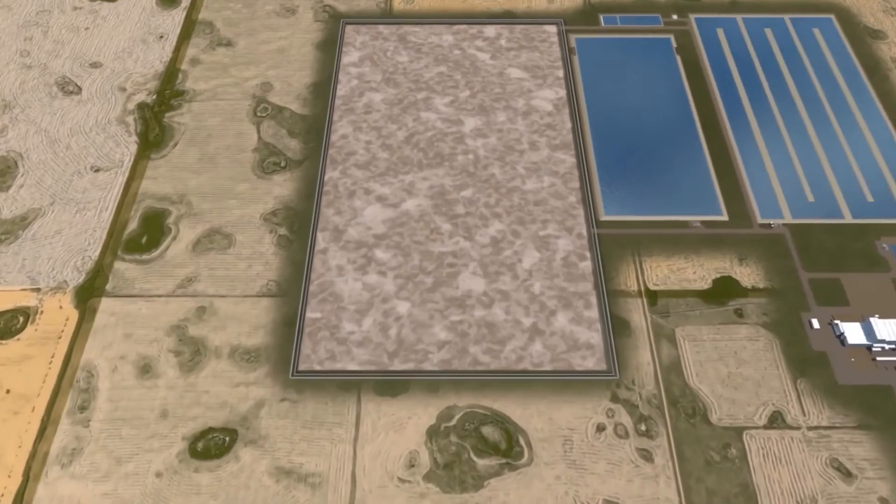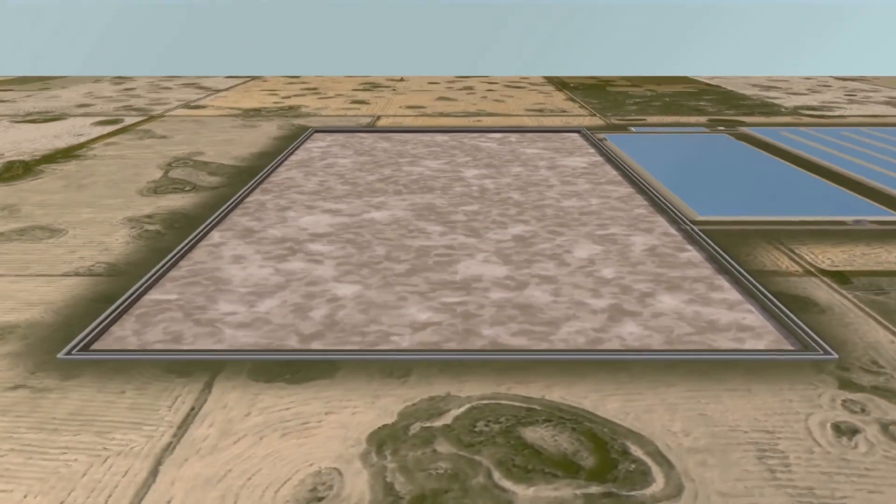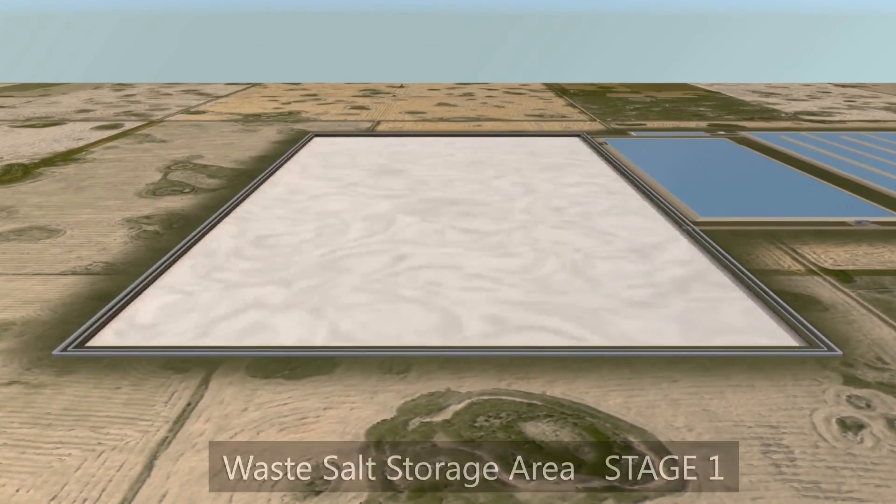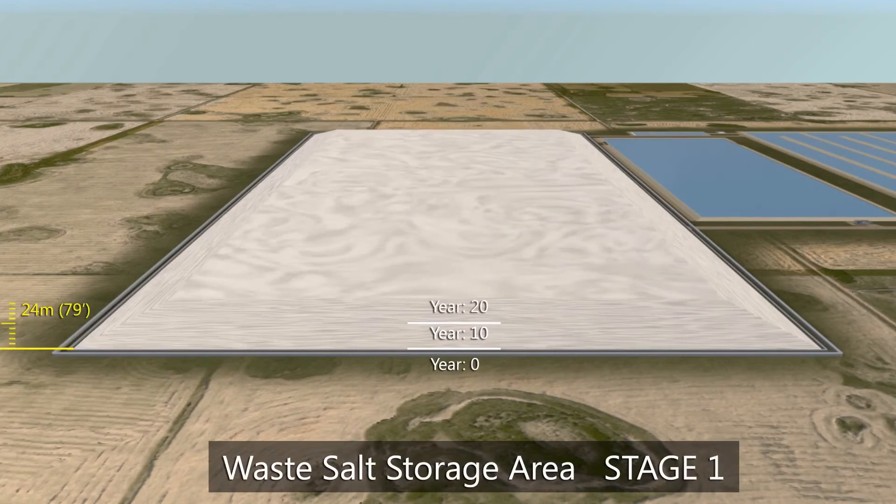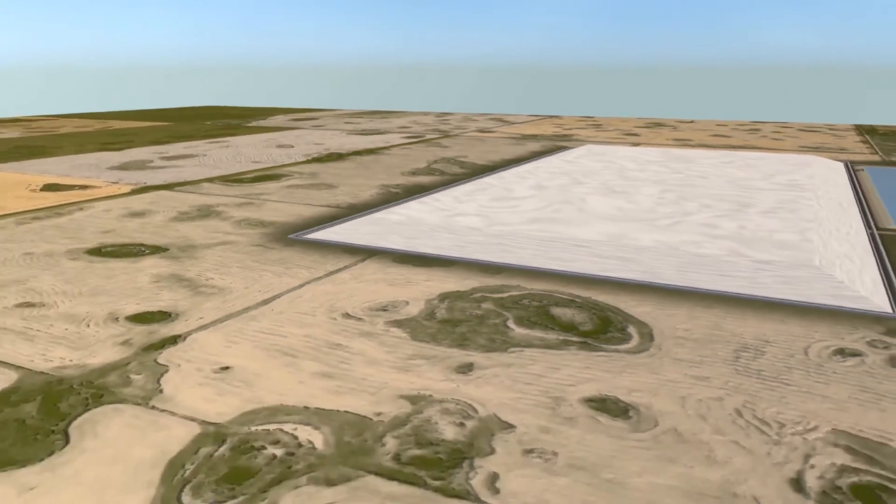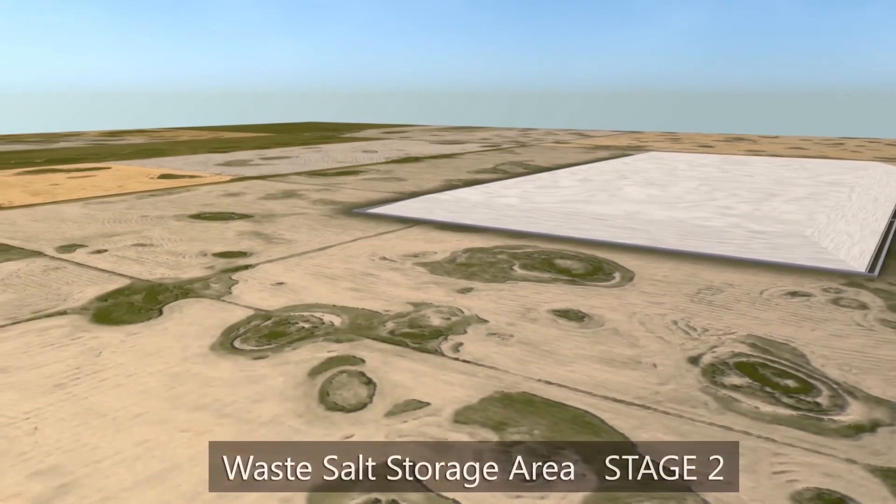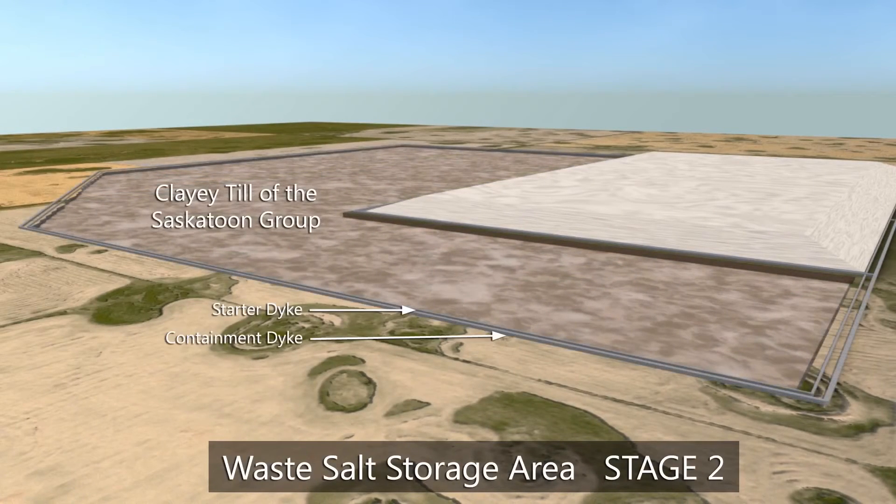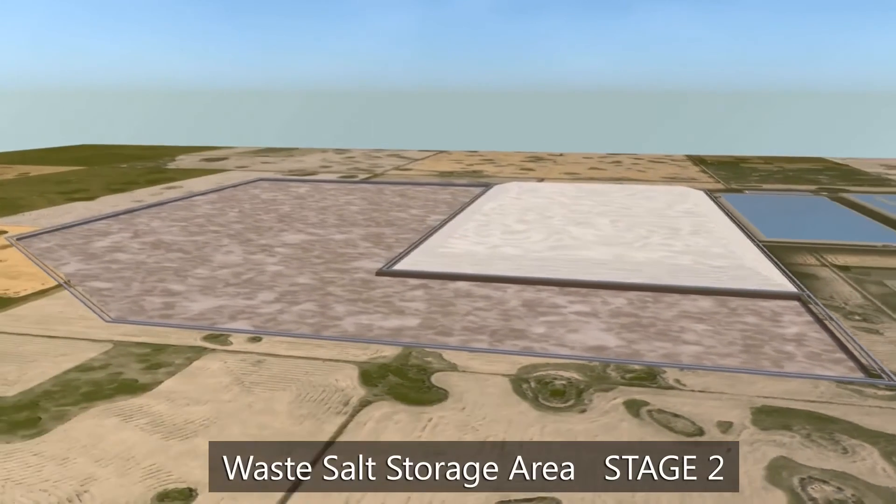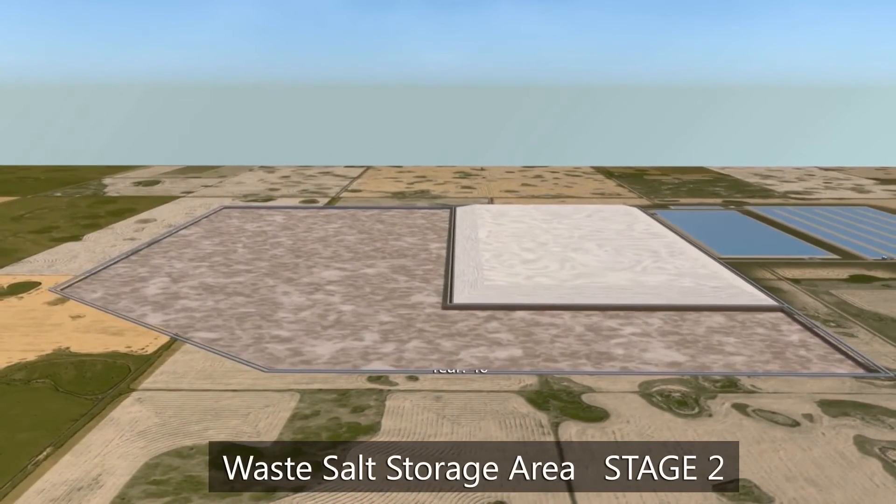The stage 1 area is designed for the first 20 years of operation. After 20 years, the salt pile will be 24 meters high. The stage 2 area is designed for a 65 year life and will have a salt pile height of 40 meters.